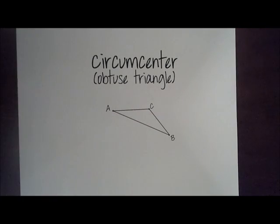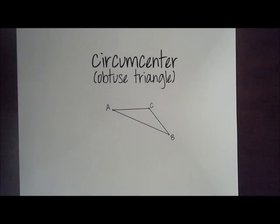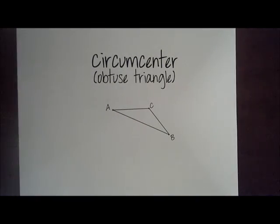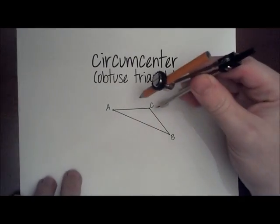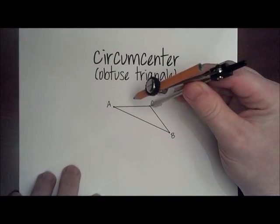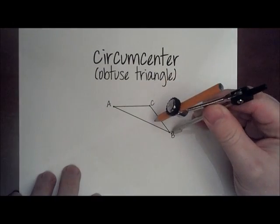Hey everyone, this is the last construction we're going to be doing for review in Unit 6. This is the circumcenter of an obtuse triangle. Remember, circumcenter is the concurrence or intersection of the perpendicular bisectors.